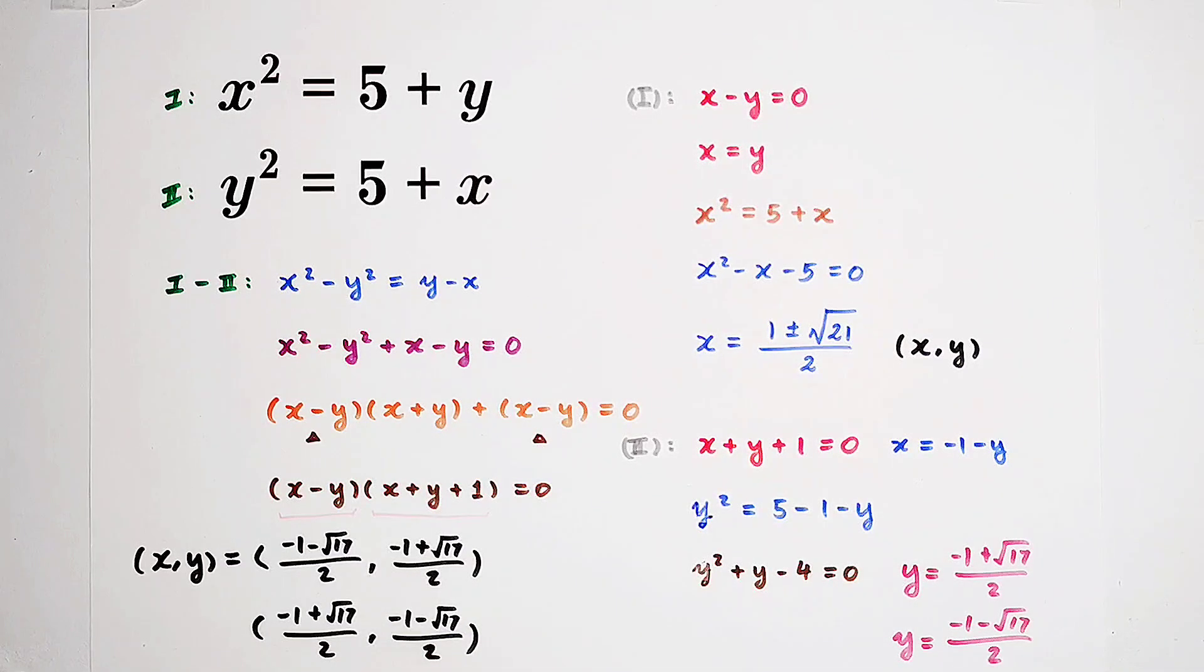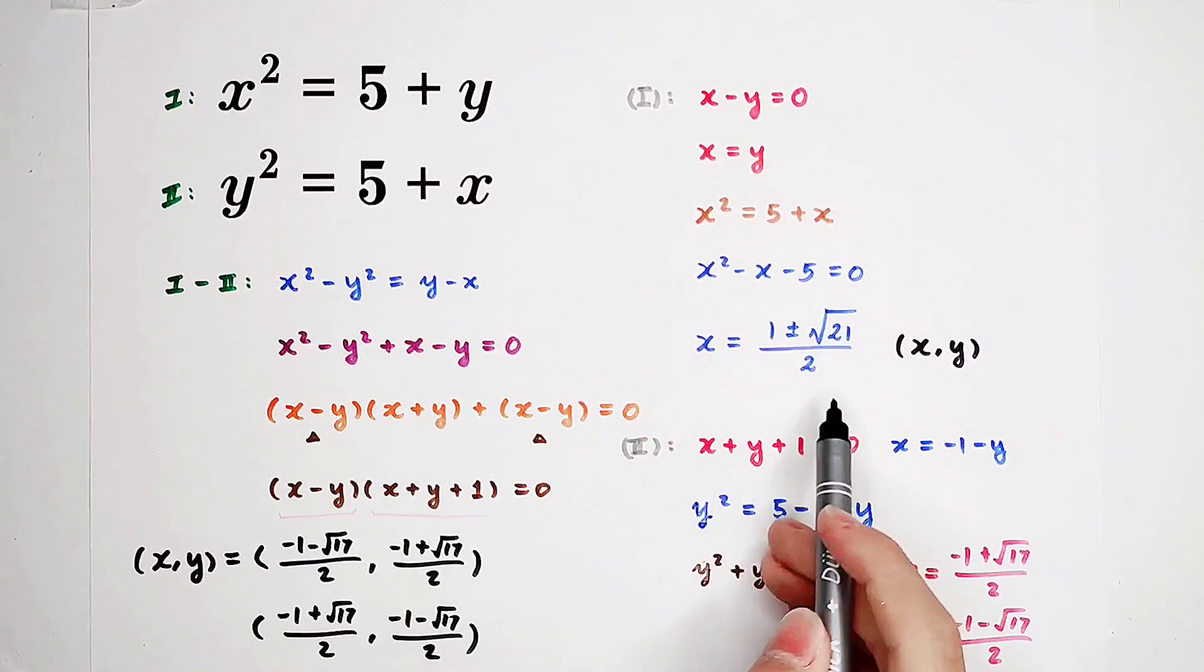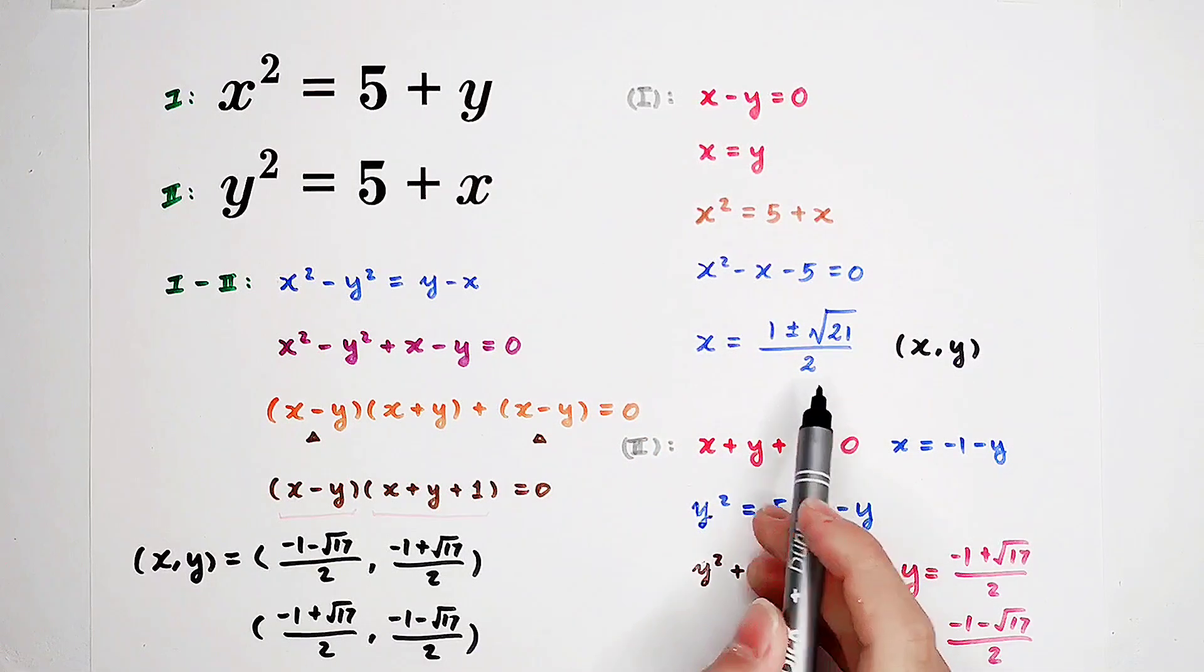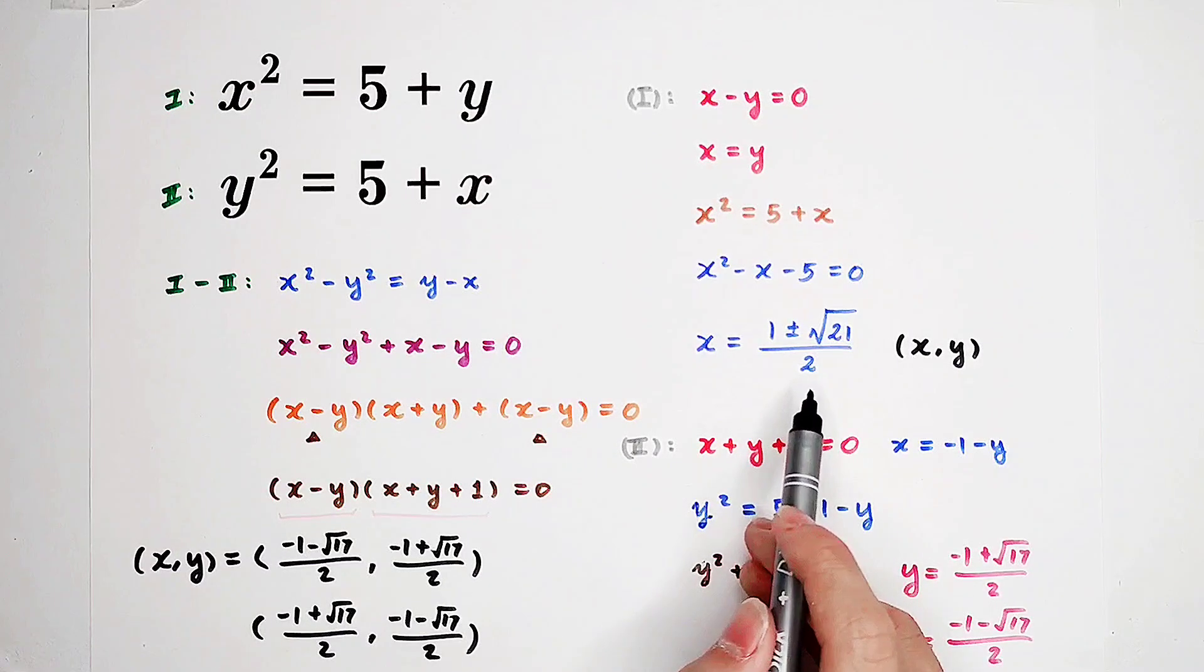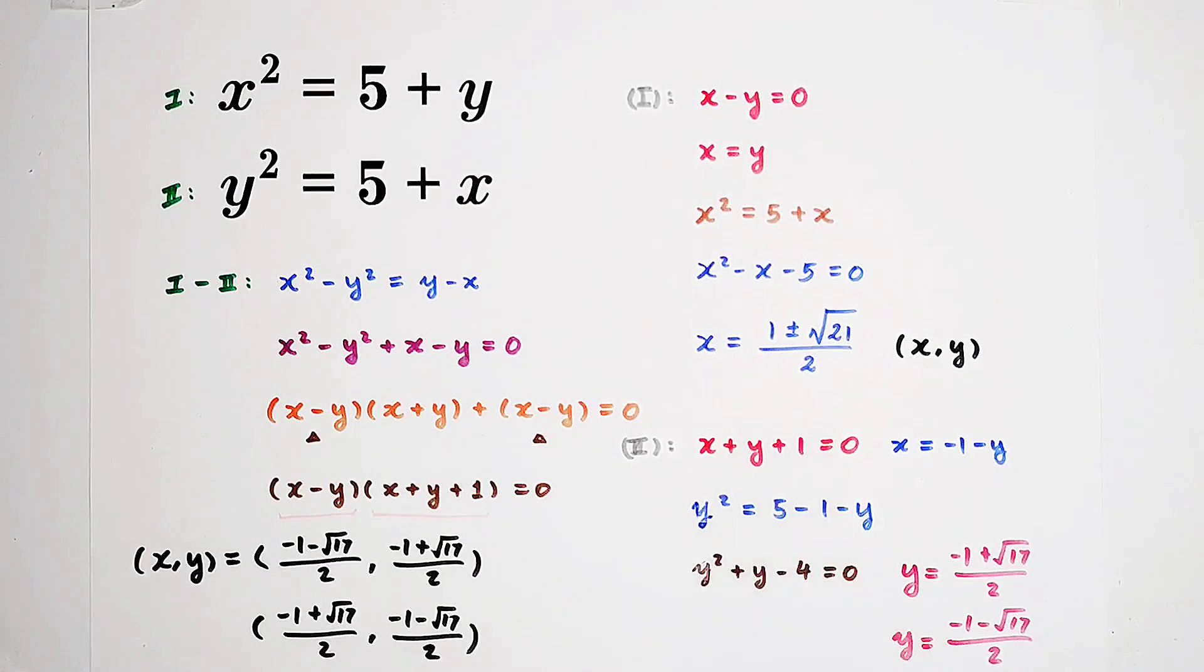Of course, we also have another two solution pairs from our first case. They're both equal to 1 plus square root of 21 over 2, or 1 minus square root of 21 over 2. So, four pairs of solutions: 1, 2, 3, 4.